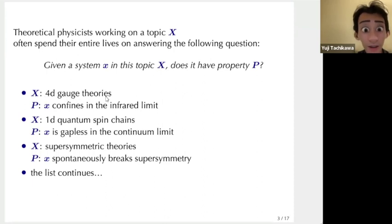If you like 4D gauge theories, you would like to ask whether a given such system confines in the infrared limit. If you like one-dimensional quantum spin chains, you might want to ask whether a given such system is gapless in the continuum limit. If you like supersymmetric theories, you are probably interested whether that system spontaneously breaks supersymmetry. The list continues.